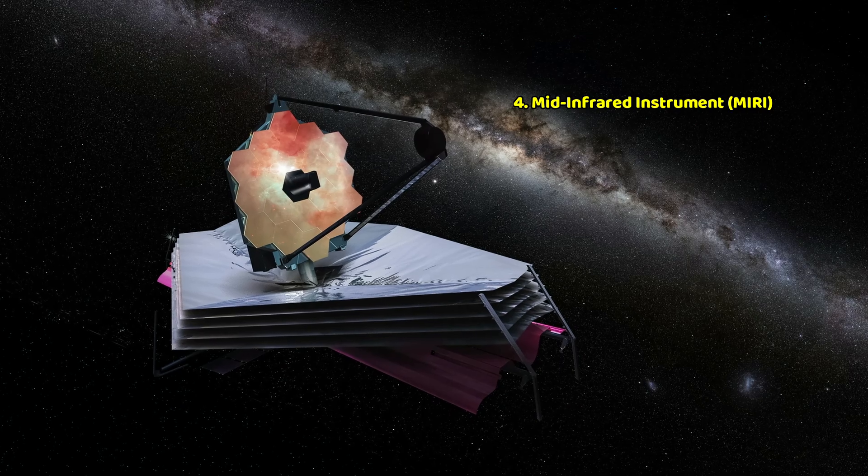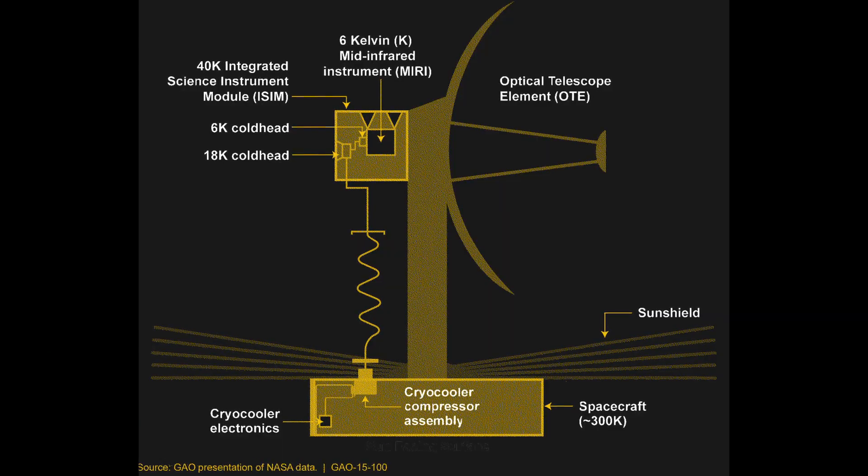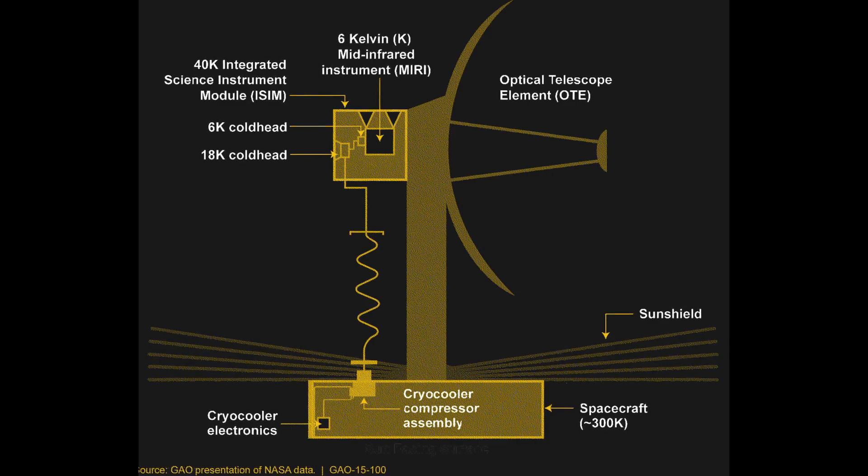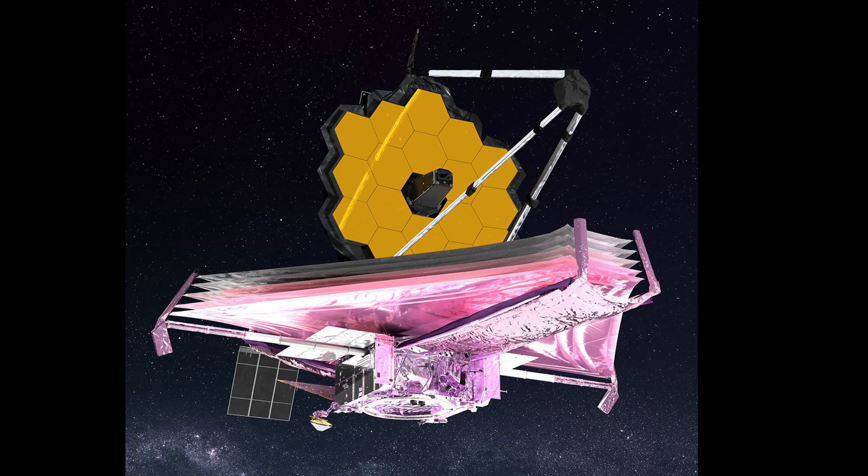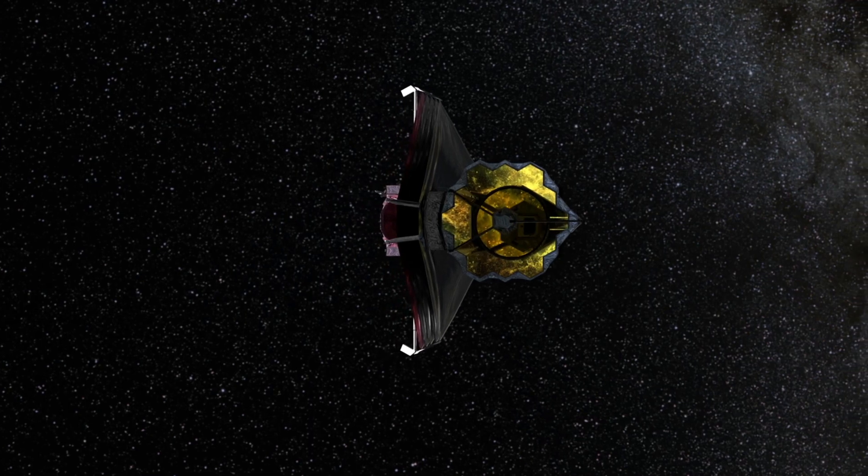But the fourth instrument required a temperature of less than 7 Kelvin, for which NASA added cryogenic cooling on board which also helped to protect the telescope from its own heat. Now James Webb was ready to carry out its mission.